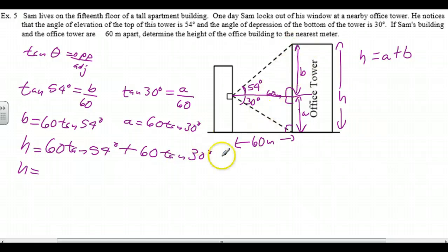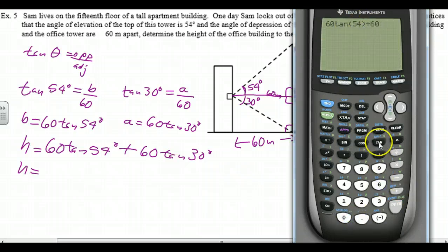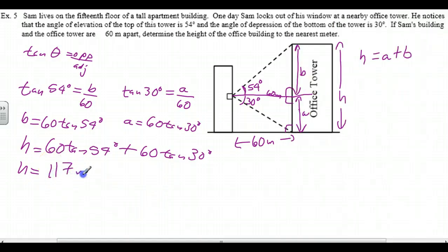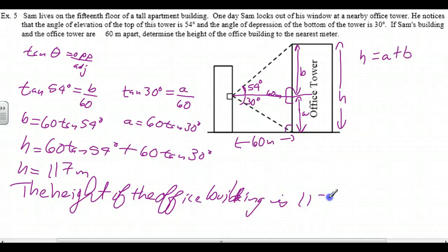We don't really need to work these out separately. On the calculator: 60 times tan(54) — it's very important to close the parenthesis, or you'll be taking the tangent of what you write after. So 60 times tan(54) plus 60 times tan(30), close and hit enter. We get our final answer to the nearest meter: 117. So the height of the office building is 117 meters.